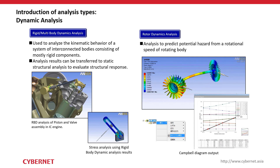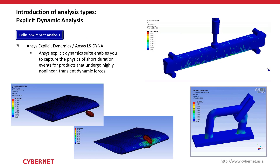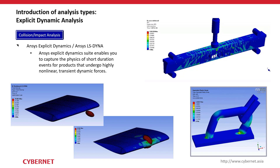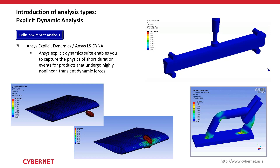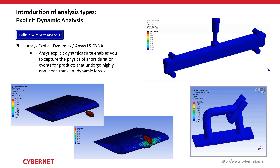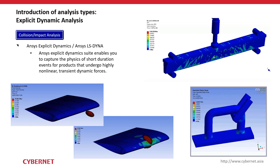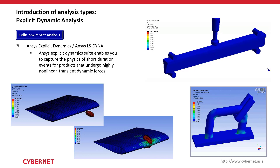Explicit dynamic analysis is used when simulating events that happen in a very short period of time or that undergo very high nonlinearities — where implicit methods are not suitable. Applications include collision analysis, crash testing, drop testing, and impact testing.